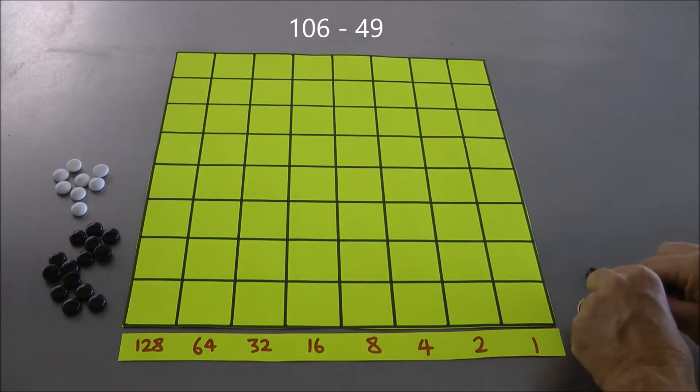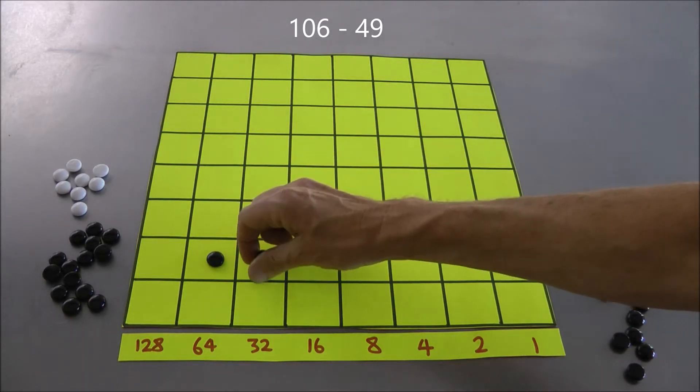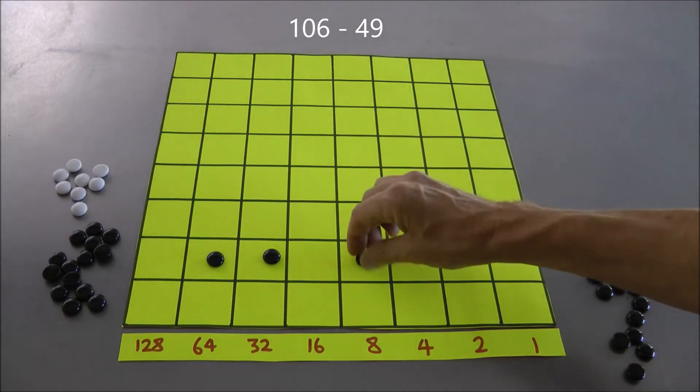So first of all, 106 is the first number I said, so let's represent that first number in the top of these two rows. 106 was, what, 96 plus 10? Here it is, 96 plus 10.